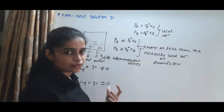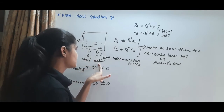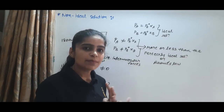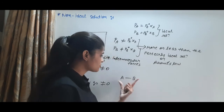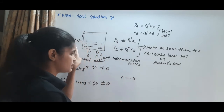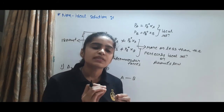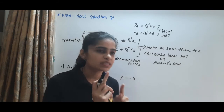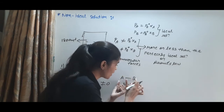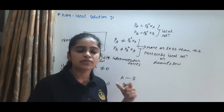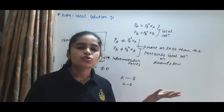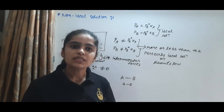Why does the volume decrease to 180 cm³? In the non-ideal condition, if the AB attraction is stronger than the AA and BB attractions, the molecules occupy less space, so the volume decreases. Conversely, if we consider another case where 100 cm³ of A and 100 cm³ of B give 250 cm³, the volume increases. This happens when the AB interaction is weaker, so the molecules occupy more space and the volume increases.